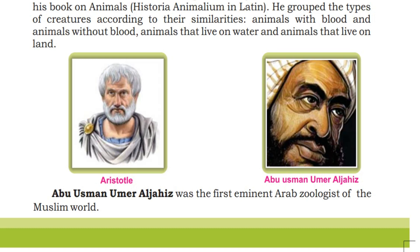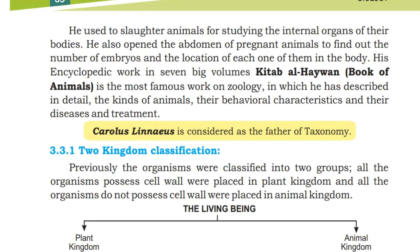Abu Usman Umar al-Jahiz was the first eminent Arab zoologist of the Muslim world. He used to slaughter animals for studying the internal organs of their bodies. He also opened the abdomen of pregnant animals to find out the number of embryos and the location of each one of them in the body.